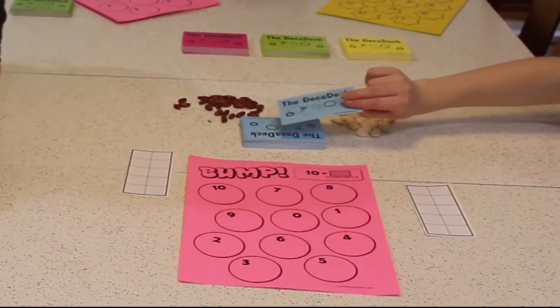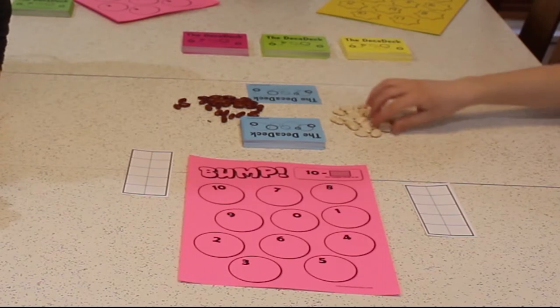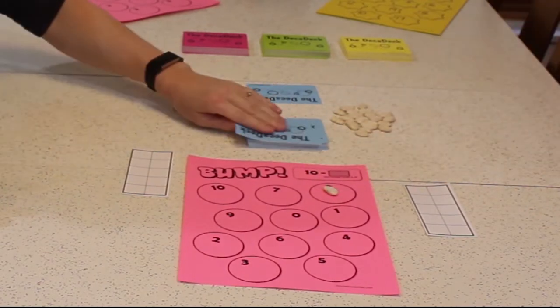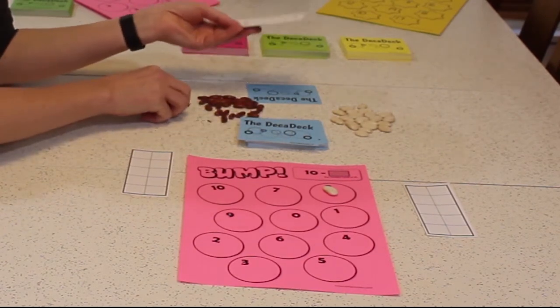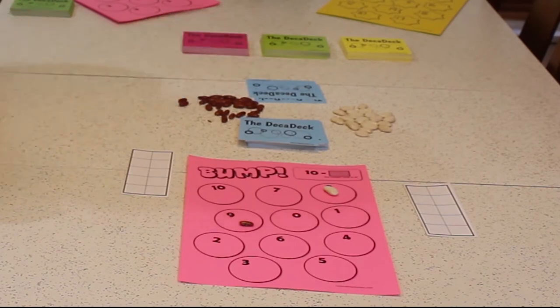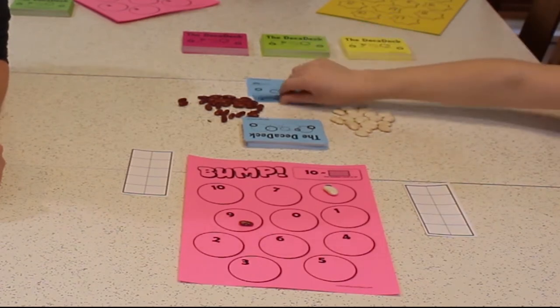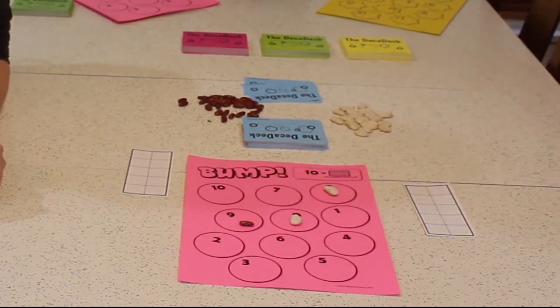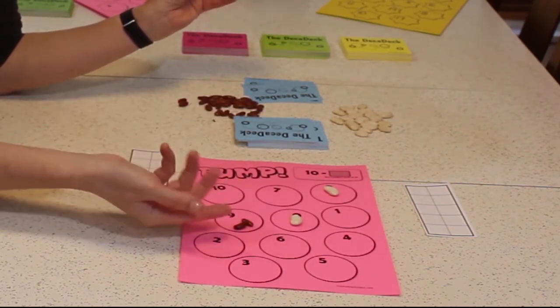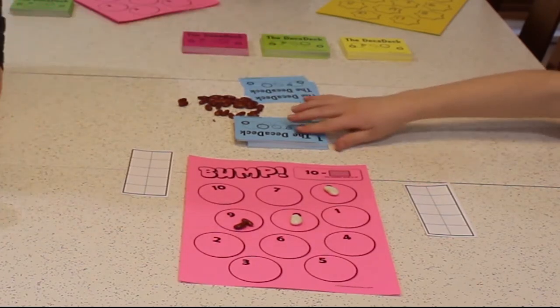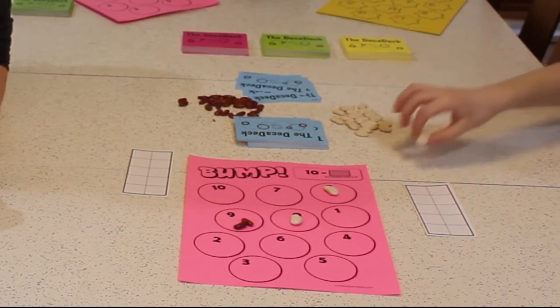Okay. Remember, it's going to be 10 minus whatever else on your card. Right. So 10 minus 2 is 8. So I'll put a Leather Bean on the 8. Okay. I got a 1. 10 minus 1 is 9, so I will put my Bean on the 9. Okay. 10 minus 10 is 0, so I'll put a Bean on the 0. Okay. 10 minus 1 is 9 again, so I have 2 Beans on the 9 now.